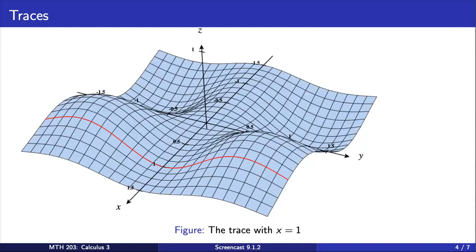Pictured here, the red curve shows the trace of f where x equals 1. You can think of this as slicing our graph on the line x equals 1. Such a trace can help us better understand what happens to f as y changes and x is held constant at 1.